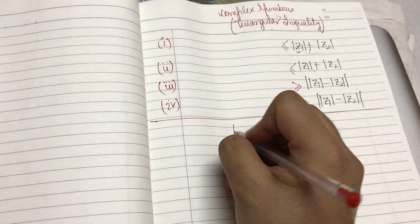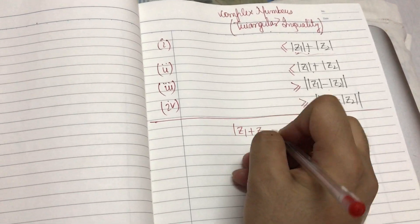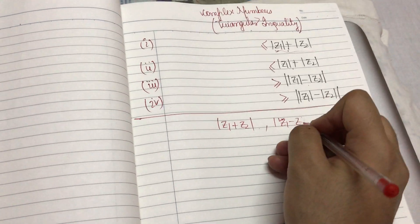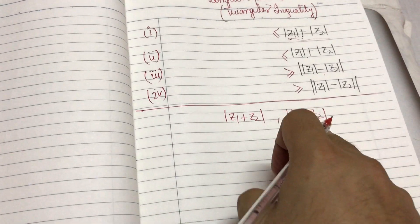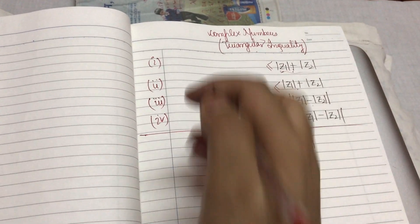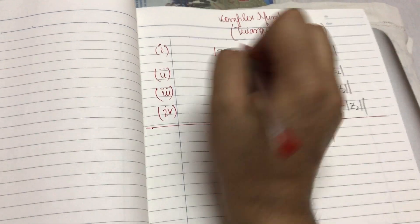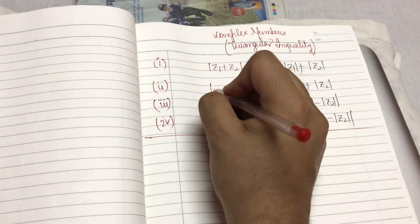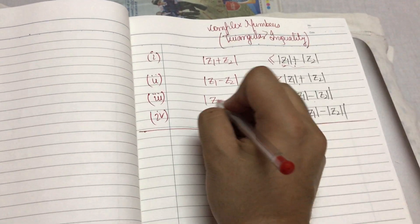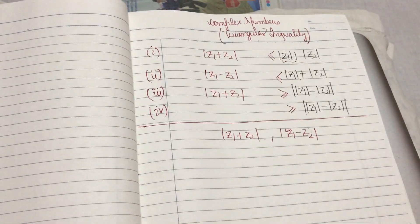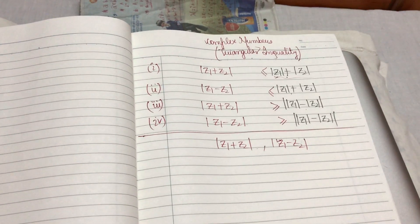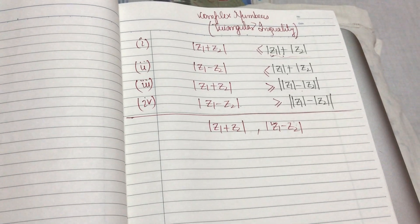I have only two cases to decide: mod of z1 plus z2 whole mod, and mod of z1 minus z2. Fit these alternately into the four cases: mod of z1 plus z2, then mod of z1 minus z2, then mod of z1 plus z2, then mod of z1 minus z2. These inequalities are derived from a triangle, so they are known as the triangular inequalities.